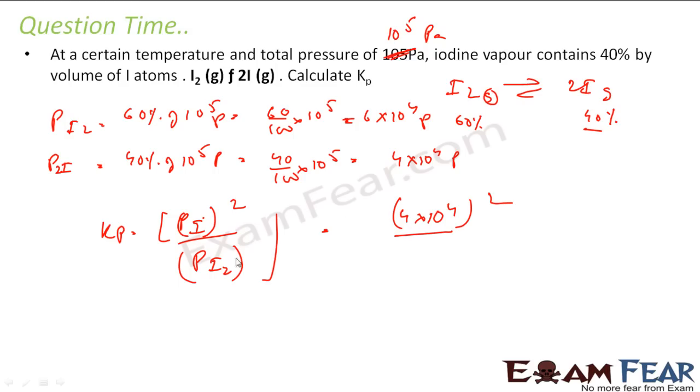Divide by partial pressure of iodine gas, which is 6 into 10^4. You solve this, you get 2.67 into 10^4. That is the answer.